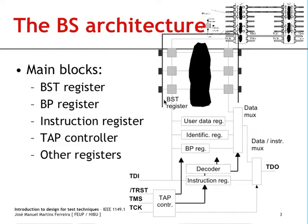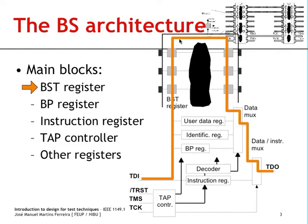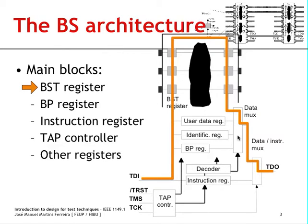The boundary scan architecture itself comprises a number of blocks, the first of which is the so-called boundary scan register, which comprises the set of boundary scan cells that we are already familiar with. This boundary scan register is placed in between TDI and TDO when these two multiplexers are operated as shown. The data or instruction multiplexer will have to be set high and the data multiplexer will have to be set high as well according to this drawing.